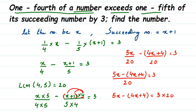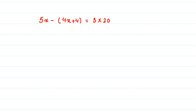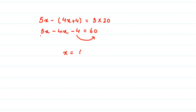So 5X minus 4X plus 4 equals 3 into 20. Now opening the bracket - minus times 4X is minus 4X, and minus times plus 4 is minus 4. So 5X minus 4X minus 4 equals 60. Combining like terms: 5X minus 4X is X. Transposing minus 4 to the other side changes the sign to plus 4. So X equals 60 plus 4, which gives X equals 64.